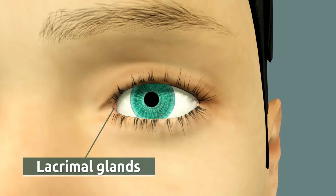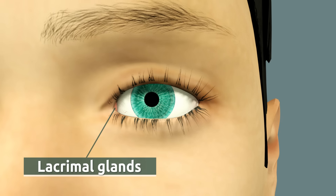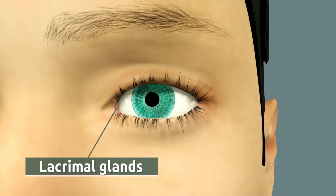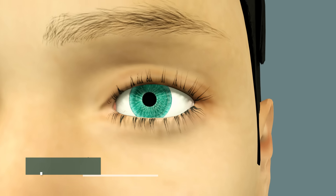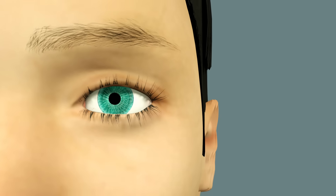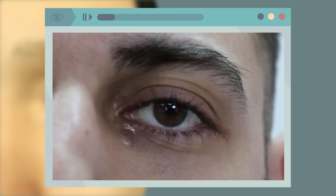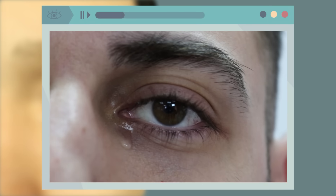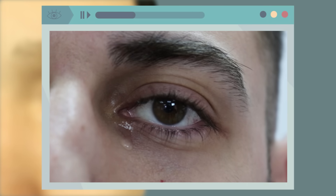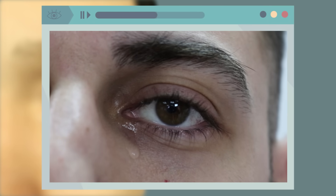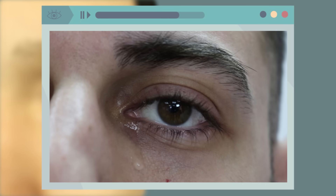The function of the lacrimal gland is to produce tears, an element of great importance, as tears carry nutrients and oxygen. Tears also help to keep the eye clean and moist. Did you know that our eyes produce tears constantly without us realizing it?